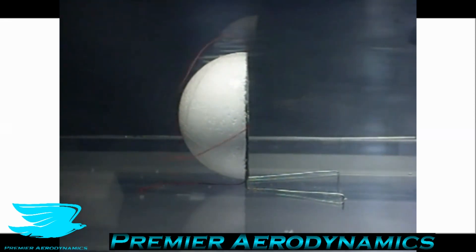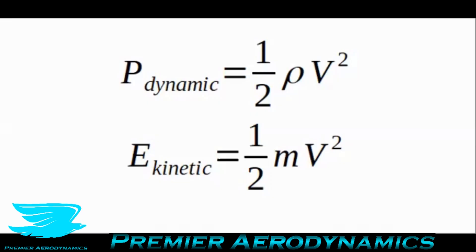Let's talk about what these different pressures are, starting with dynamic pressure. Looking at the equations, the dynamic pressure P_dynamic equals half times rho times V squared — half times the density times the velocity squared. We see this in a lot of different other equations; for example, the drag coefficient or lift coefficient equations. What this represents is how much pressure is in the flow.